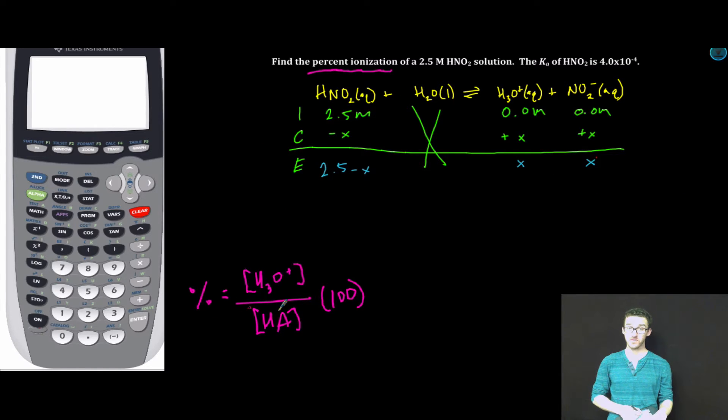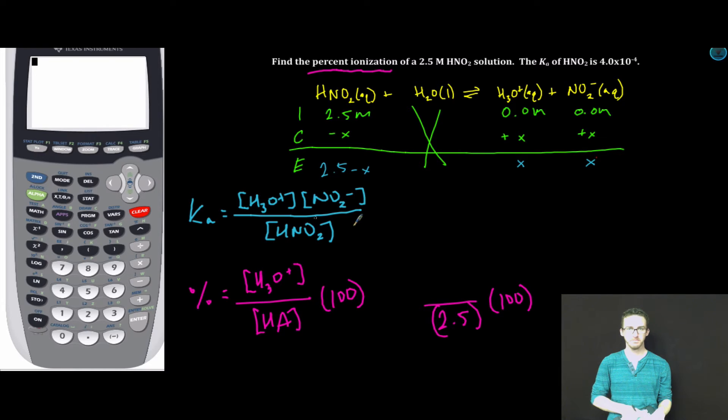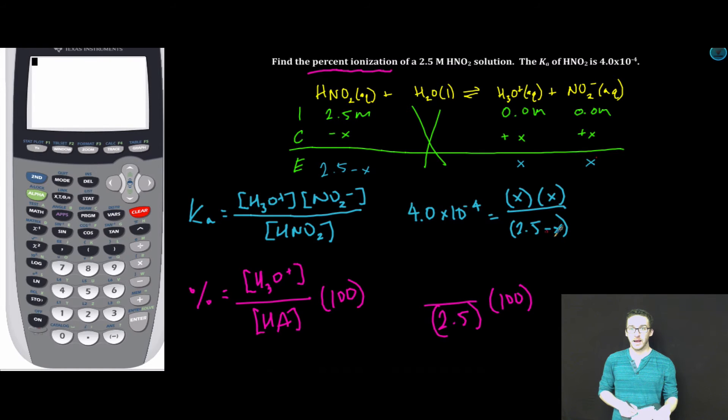Okay, so as I think about solving for percent ionization, I already know the initial concentration of my weak acid to be 2.5 molar. I need to use the ICE table that I've just created to determine what the hydronium ion concentration is in this solution. I'm going to set up my Ka expression. I'm going to plug in the value for Ka and the equilibrium concentrations from my ICE table.